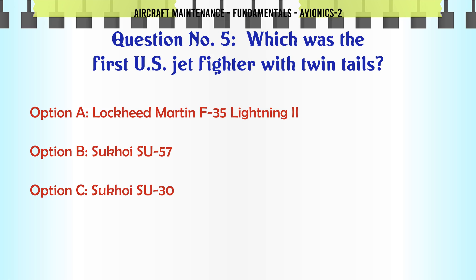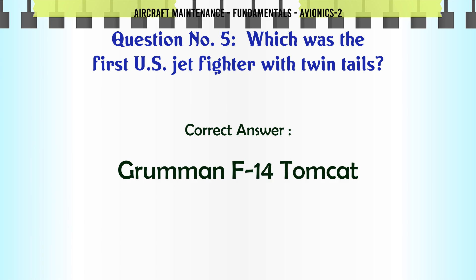Which was the first US jet fighter with twin tails? A. Lockheed Martin F-35 Lightning II, B. Sukhoi Su-57, C. Sukhoi Su-30, D. Grumman F-14 Tomcat. The correct answer is Grumman F-14 Tomcat.